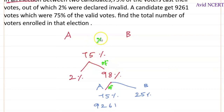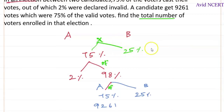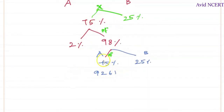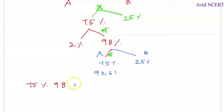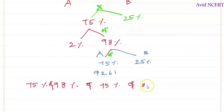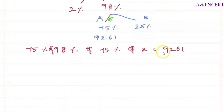We need to find X, the total number of voters enrolled. 75% of X is the total votes cast. So the equation can be formed as: 75% of 98% of 75% of X equals 9261 votes.